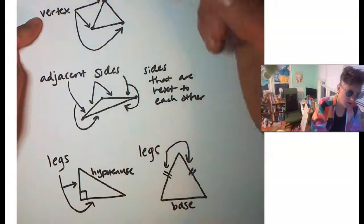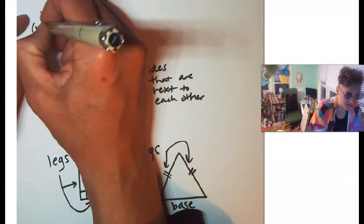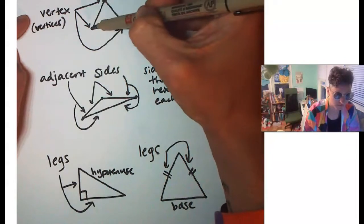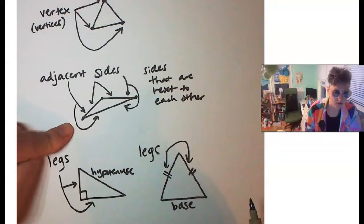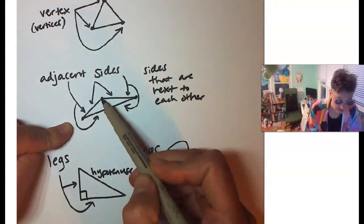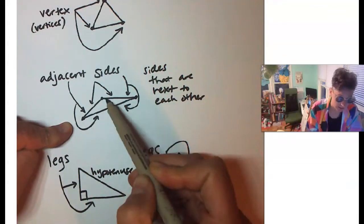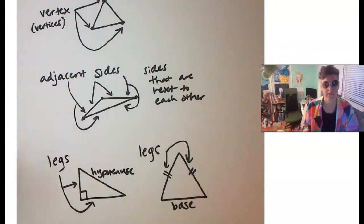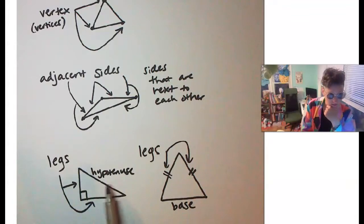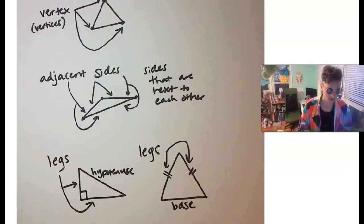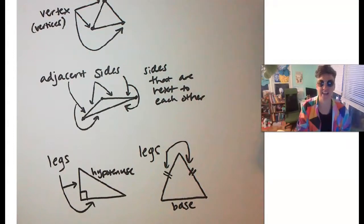To recap our vocab: every triangle has three vertices — they are the corners of the triangle. Adjacent sides are sides that are next to each other. Legs in a right triangle are the non-hypotenuse sides. Legs in an isosceles triangle are the congruent sides. And the base is the non-congruent side of an isosceles triangle.